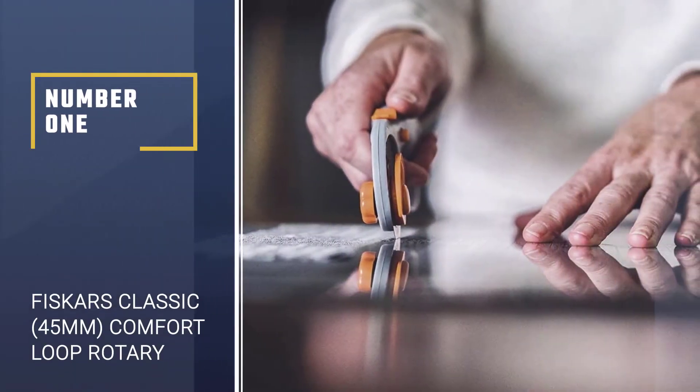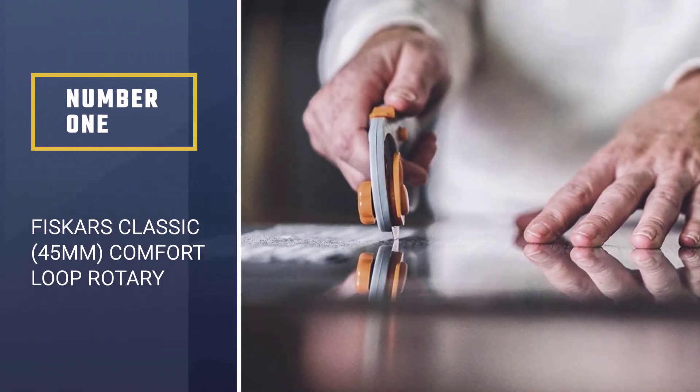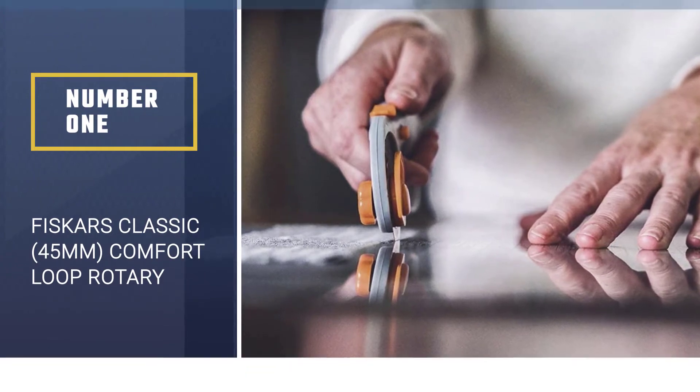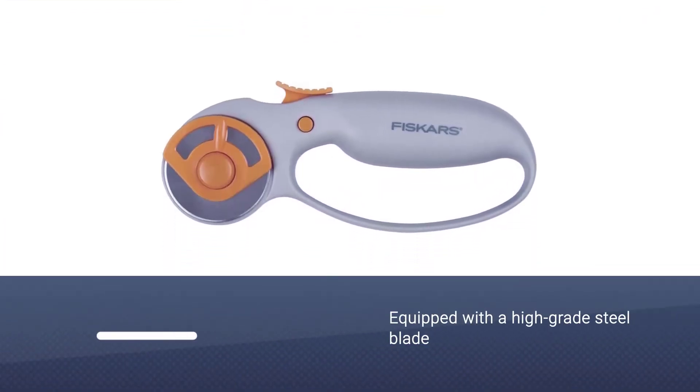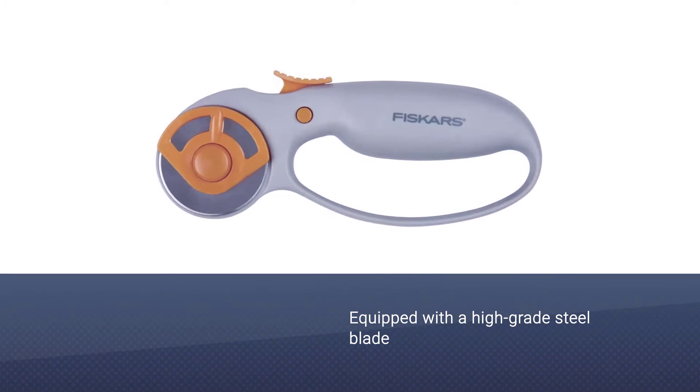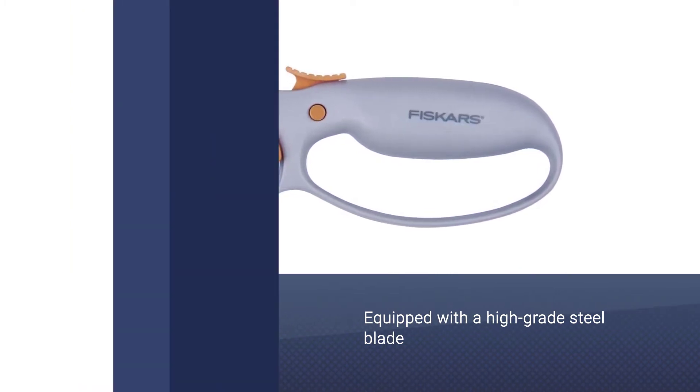Number 1, most popular. Fiskars Classic 45mm Comfort Loop Rotary Cutter. Most of us only want a rotary cutter that cuts right through fabrics without a hitch.